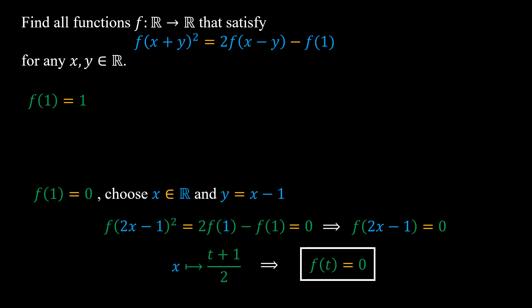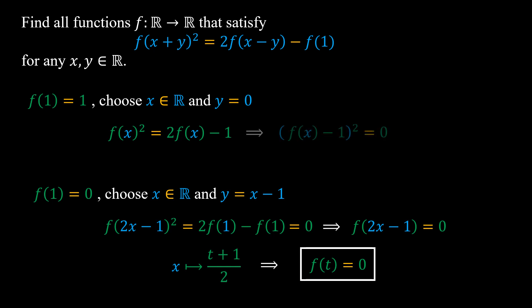In case f(1) equals 1, we can choose x as any real number and y equal to 0. So we have f(x²) equals f(x²), which simplifies to show that f(x) equals 1 for any real number x. And of course this function also satisfies the functional equation.